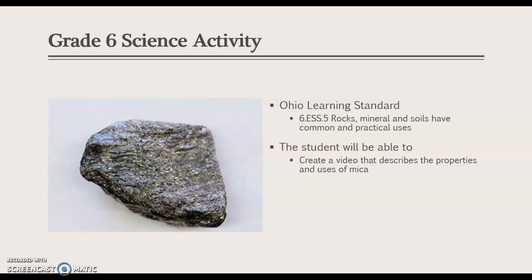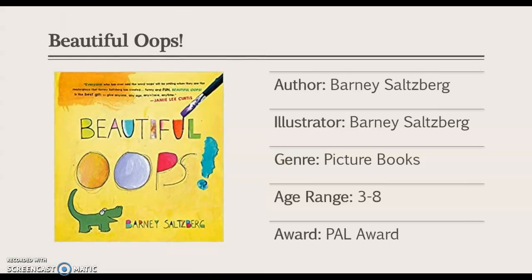Moving on from Stargirl, we have this lovely picture book called Beautiful Oops. The whole premise of the story is that mistakes are not always a bad thing — in fact, they can be beautiful things.